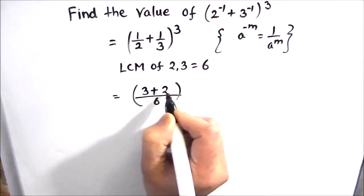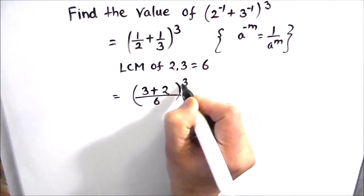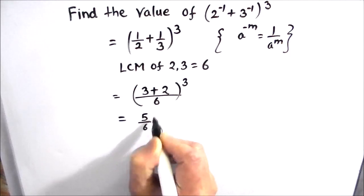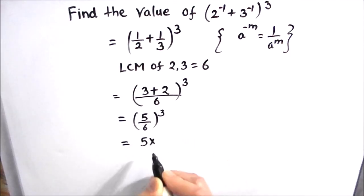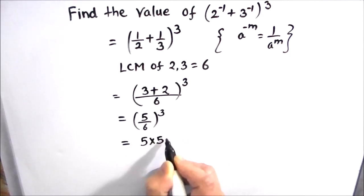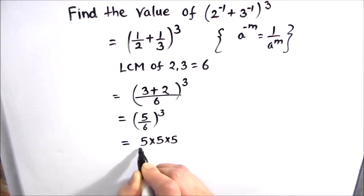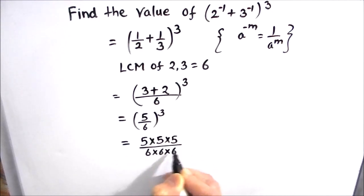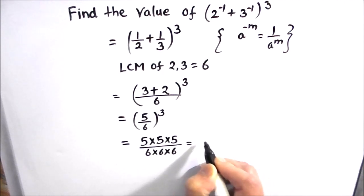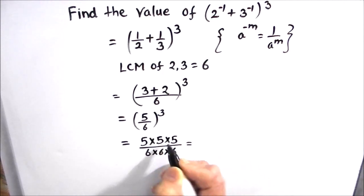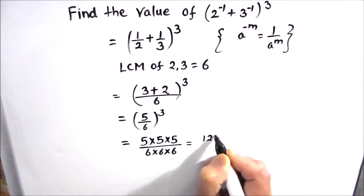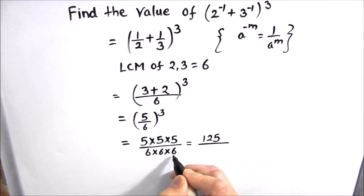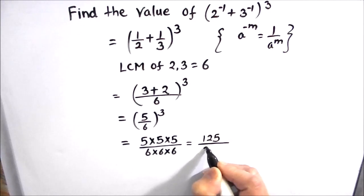So that's going to be 3 plus 2 divided by 6, whole cube, which is equal to 5 divided by 6, whole cube. Whole cube means multiplying the numbers 3 times, so that's going to be 5 times 5 times 5 divided by 6 times 6 times 6, which is equal to 125 divided by 216.